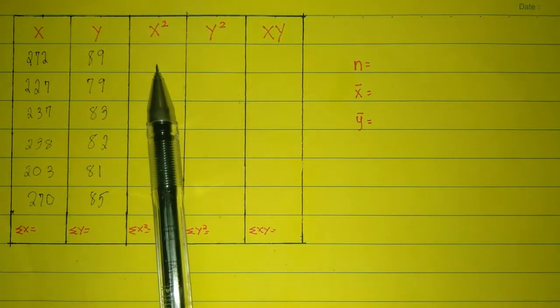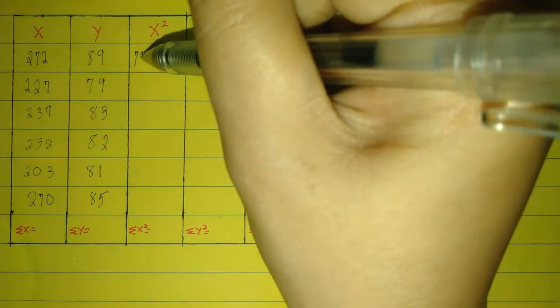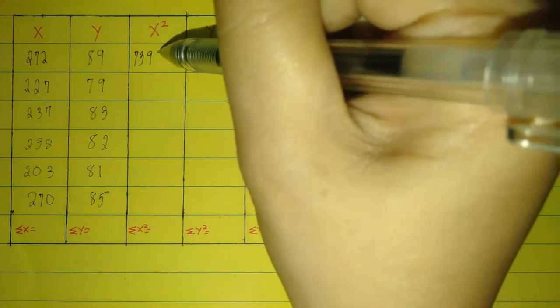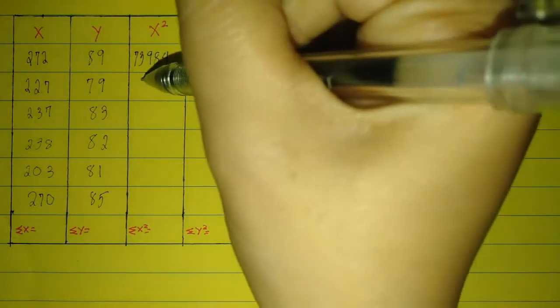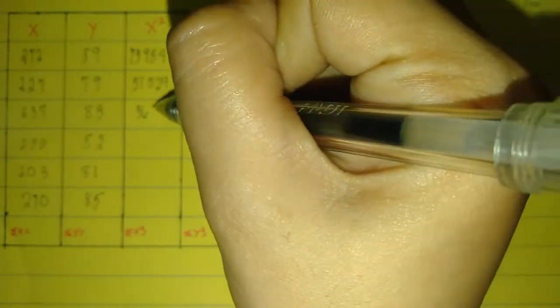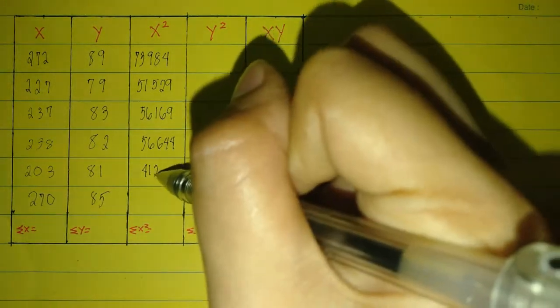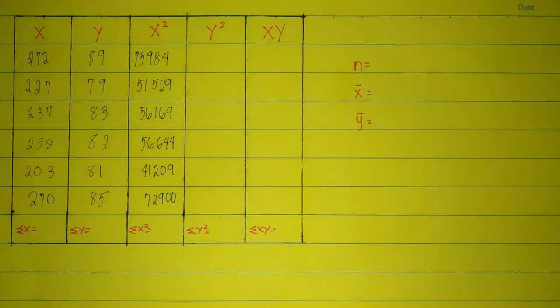To get x squared, multiply x by itself. 272 multiplied by 272 is 73,984. 227 times itself is 51,529. 237 times itself is 56,169. 238 multiplied by itself is 56,644. 203 times itself is 41,209. 270 times itself is 72,900.